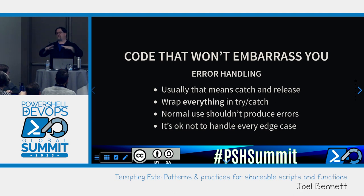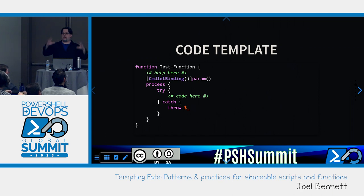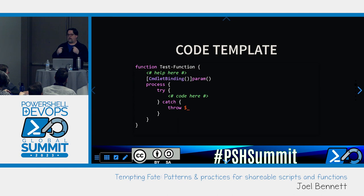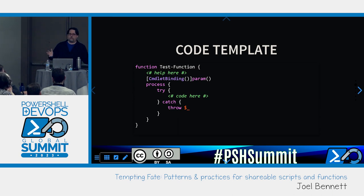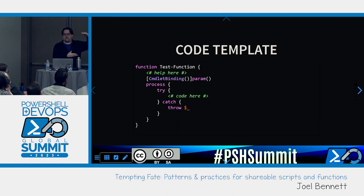Follow this template: put a try-catch inside each of your blocks — process block, end block, begin block. Put your code in the middle, and at the bottom, throw. If you know there's an exception you can recover from, handle it inside where it says 'code here.' This outer catch is the last-ditch: everything you knew how to think of ahead of time — that's not what happened. Now you can do way better than just re-throwing, but at least with re-throwing you know you're in control. If somebody else catches it outside, it doesn't just break out of your code unpredictably.